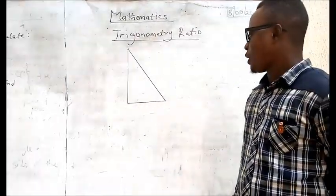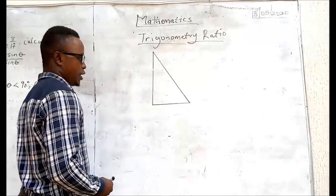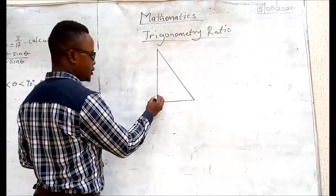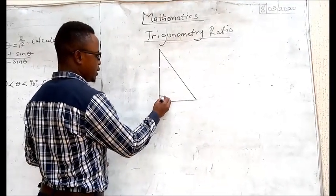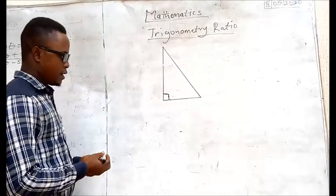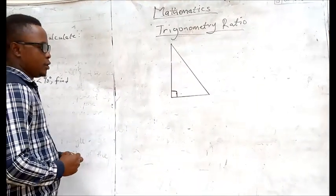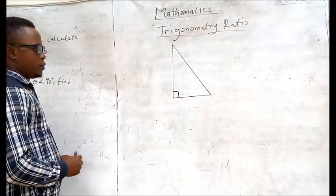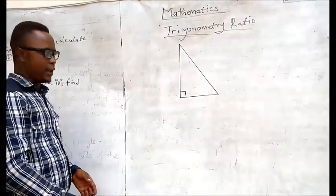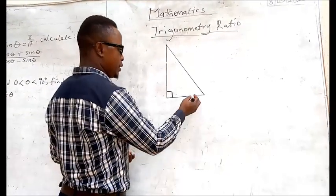Now if you look at the board, this is a right angle triangle. And why is it called a right angle triangle? Because there is an angle of 90 degrees here. The angle 90 here is called the right angle.